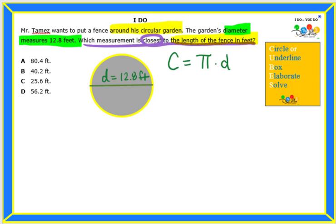Now we want to substitute what we know with numerical values. So we have the circumference, which we are looking for and do not know, is equal to pi, which we will use 3.14, times the diameter, which was 12.8 feet. So to find the circumference, we are going to multiply 3.14 times 12.8.